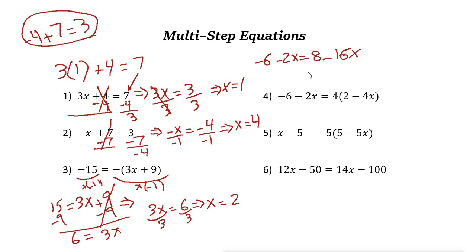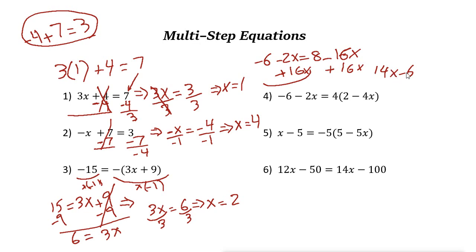By adding that value to both sides. Here we have negative 2x and negative 16x. Negative 2x is bigger than negative 16x. Now let's add 16x to both sides — plus 16x on each side. On the left: negative 2x plus 16x is 14x, so it becomes 14x minus 6. On the right, negative 16x plus 16x cancel out, so the other side is just 8.